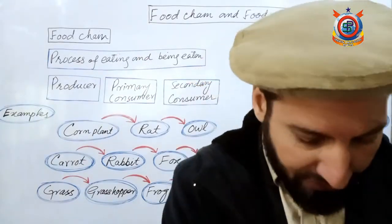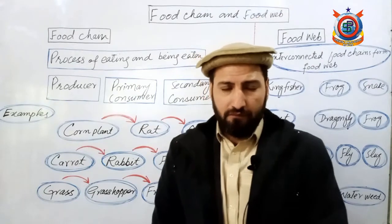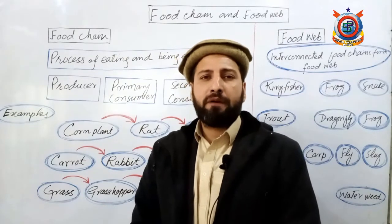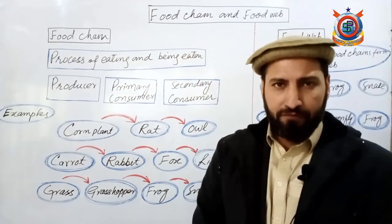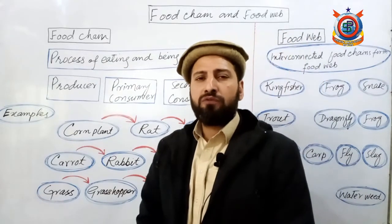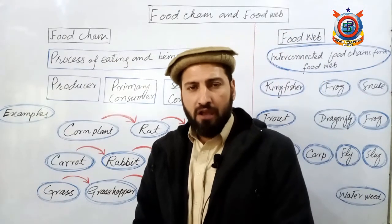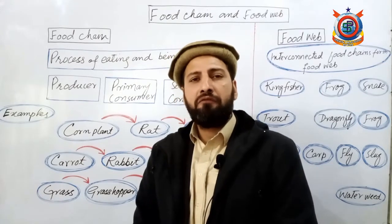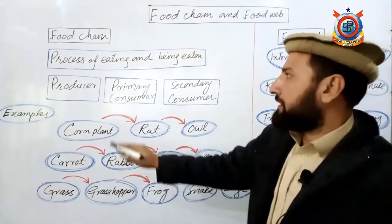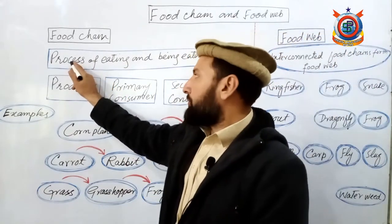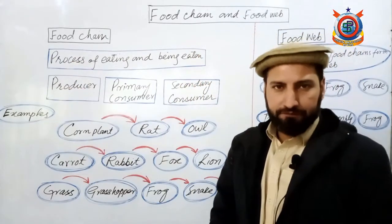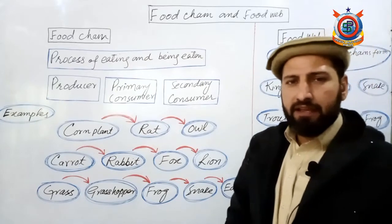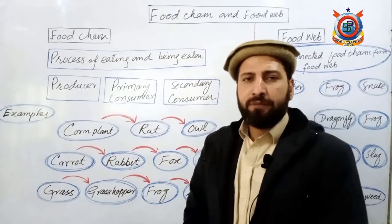Food chain - as the name indicates - is the name of a relationship between living organisms. This relationship exists among organisms for the sake of food. To obtain food, organisms are dependent on each other. From this dependency, a structure is formed which we call a food chain. Food chain ki simple definition: food chain is basically a process of eating and being eaten.